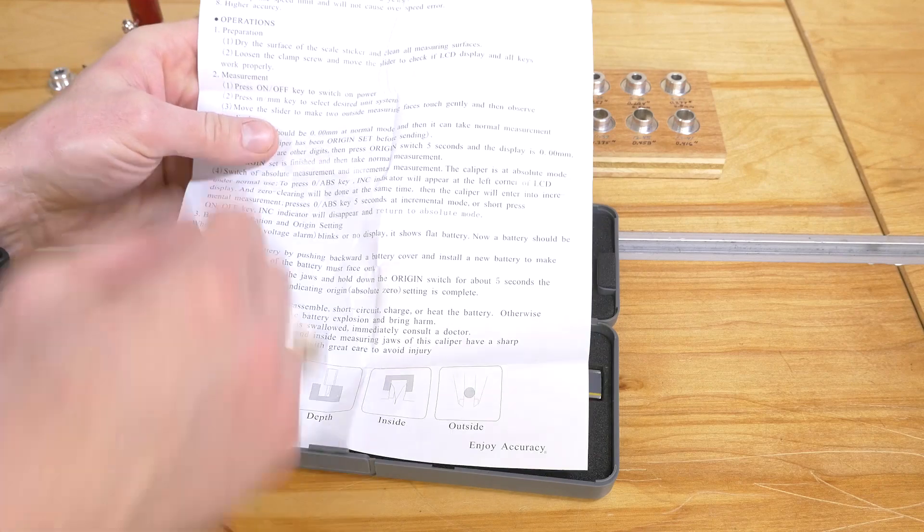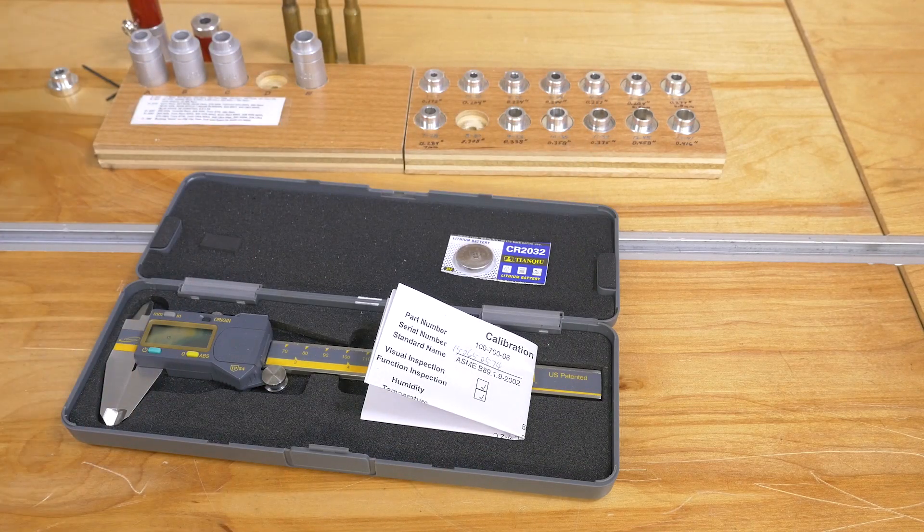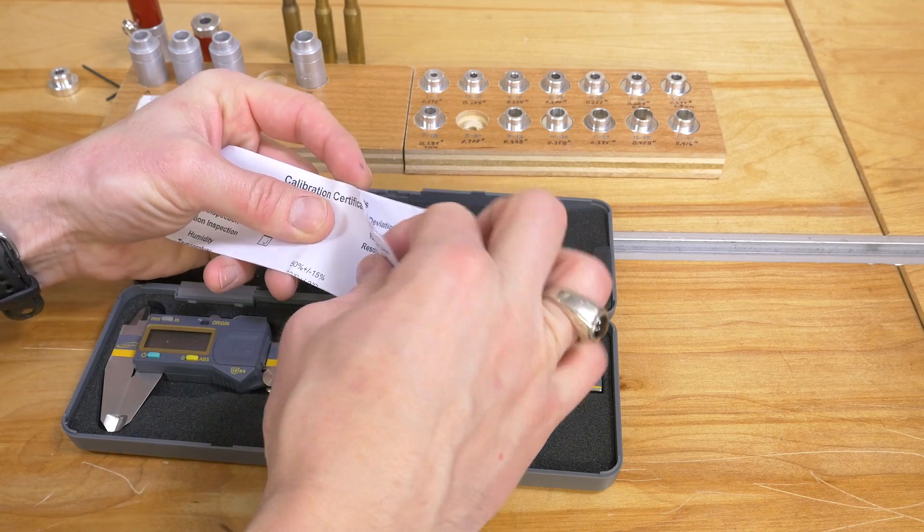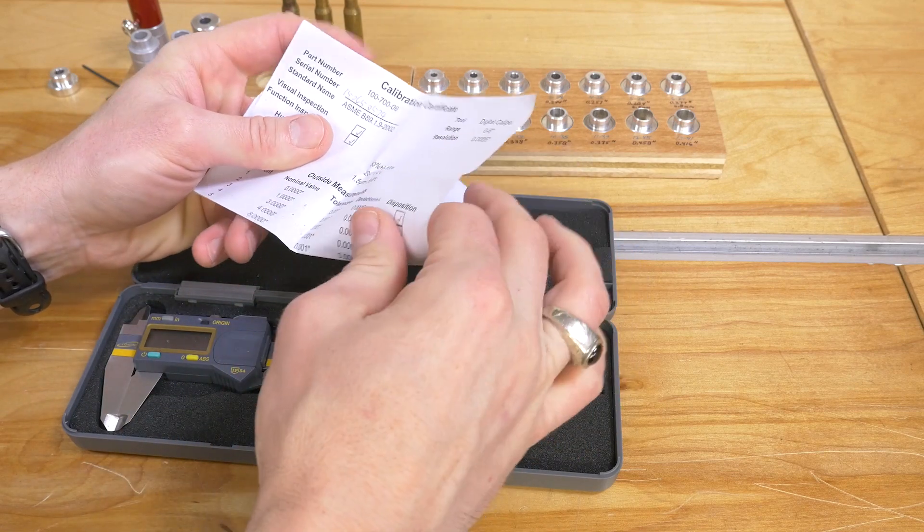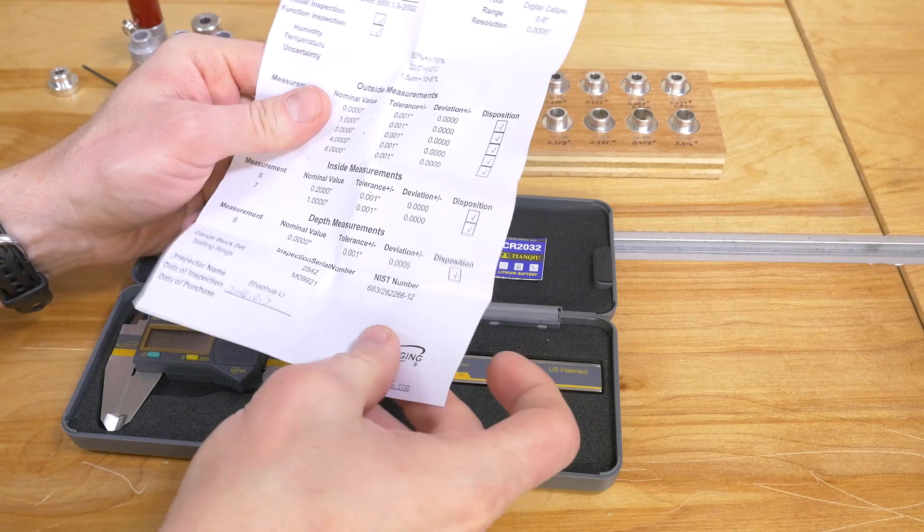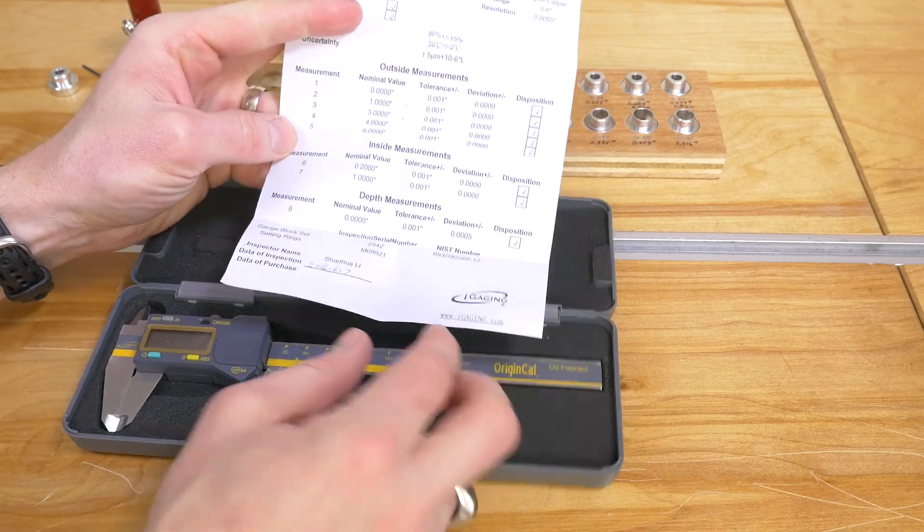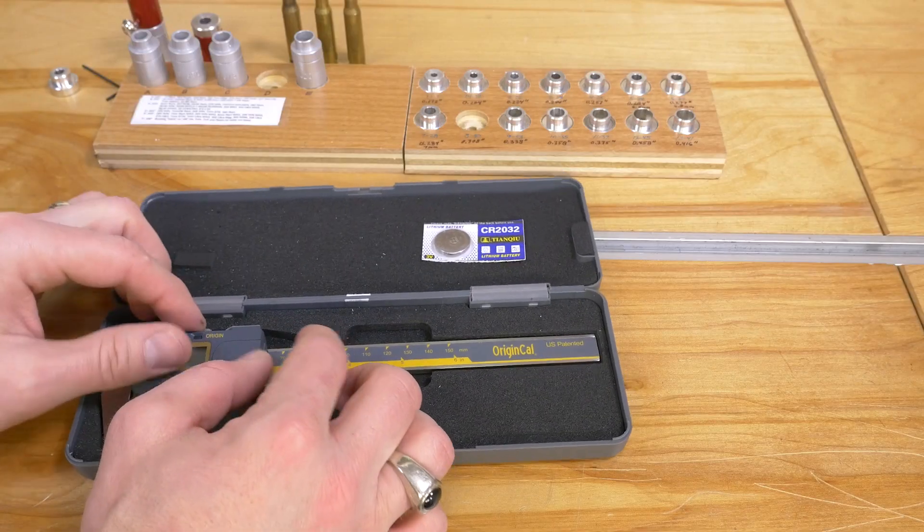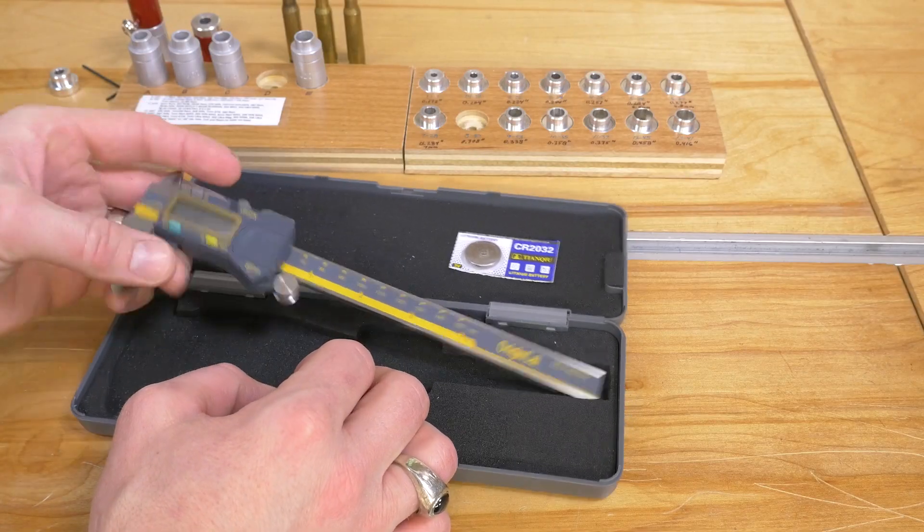We've got typical instructions on how to use the digital calipers. We've also got this calibration page. Now, this tool is made in China to US specifications, but I love the fact that we actually have a specific person on a specific date that calibrated this set of digital calipers.